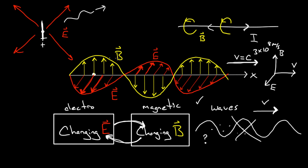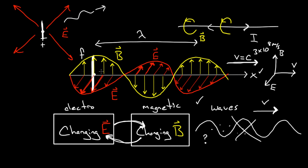These waves can have any wavelength — measured from one peak to the next along the spatial direction — and any particular frequency, where the frequency is the rate at which the fields change. If you watched a point in space over time, the magnetic field would point up, then down, then up, then down, and the number of times per second that happens is the frequency. The range of all possible frequencies and wavelengths that electromagnetic waves can have is called the electromagnetic spectrum, and the visible spectrum is just a small region within it.